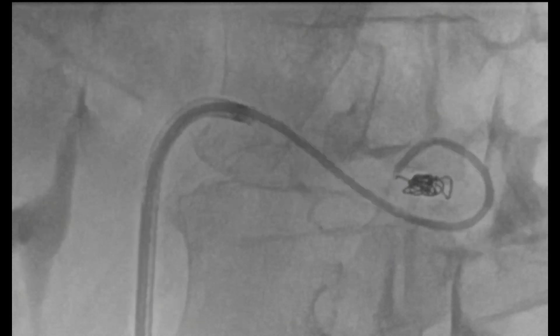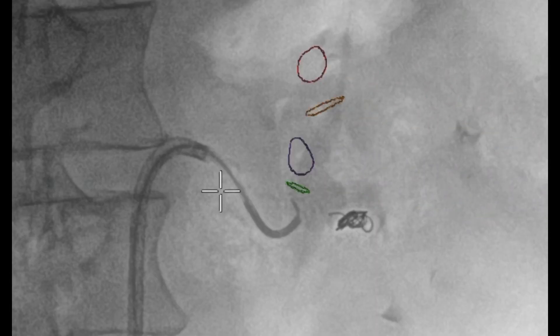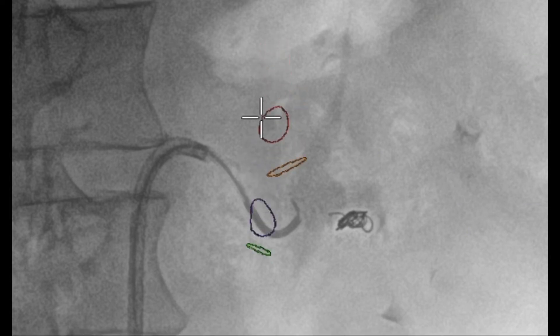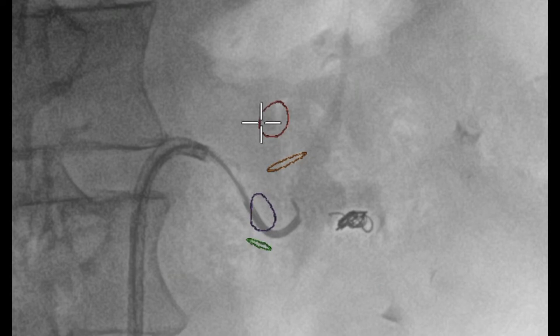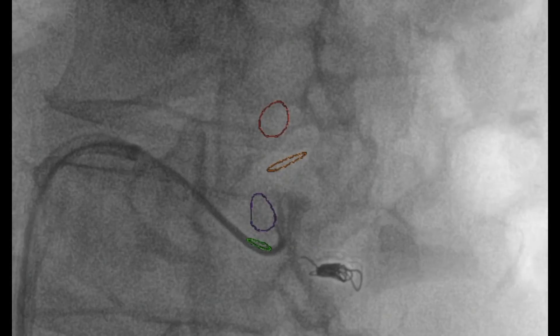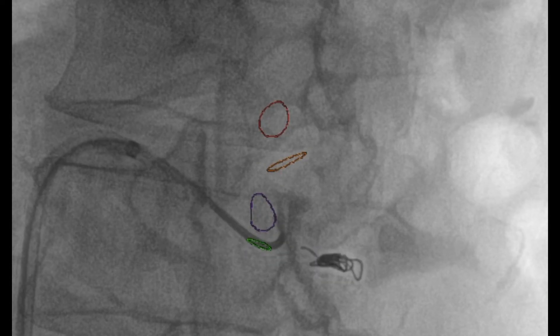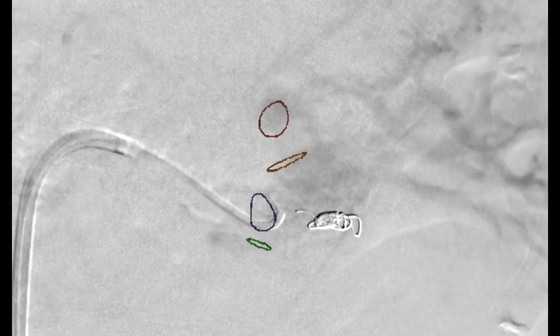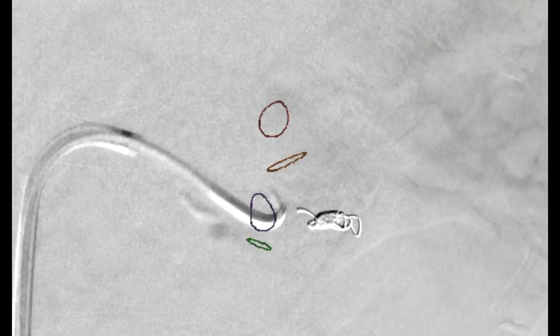Once coil embolization is performed, we then turn our attention to placing a covered stent to exclude the aneurysm sac. A catheter is then introduced in the aneurysm sac and an angiogram is performed to better delineate the anatomy.